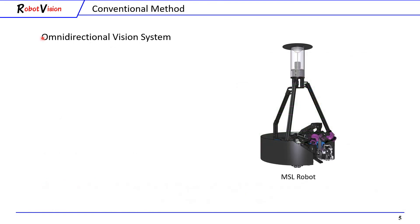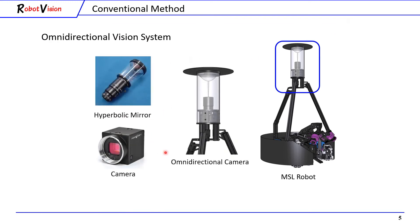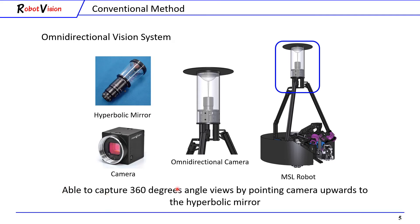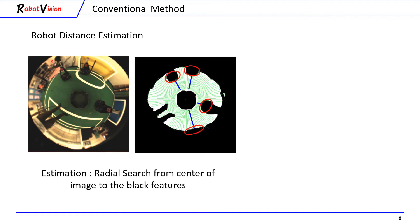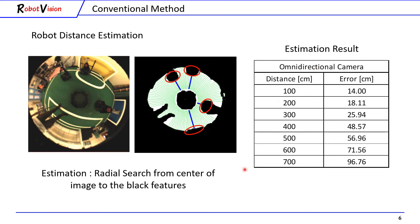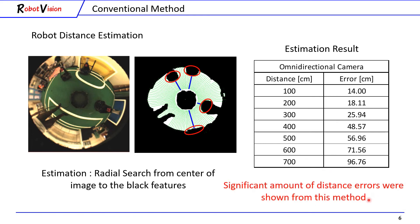The conventional method uses an omnidirectional vision system located at the top of the robot, consisting of a hyperbolic mirror and a camera. This system captures 360-degree angle views by pointing the camera upwards to the hyperbolic mirror. This figure shows the image taken from the omnidirectional camera. To recognize robots, we segment black color and mask it with the field area. Then, the black feature, which is the robot, was searched radially from the center of the image. The image pixel count was converted to actual distance. This table shows the distance estimation when the target is placed from 1 meter to 7 meters, revealing a significant amount of distance error with this method.